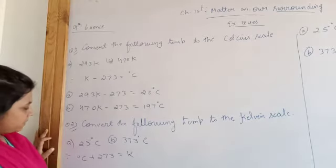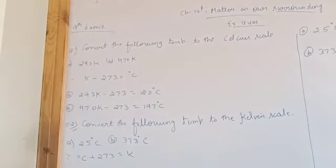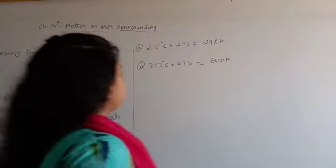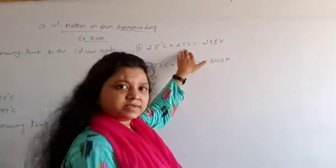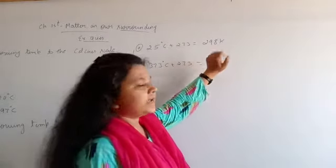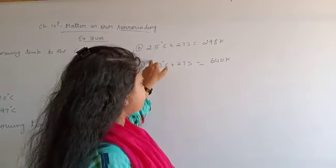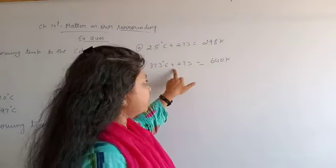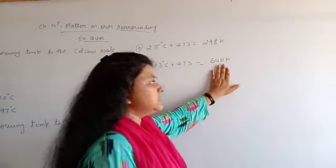For the conversion, the answer is 298 Kelvin. The answer is 373 Kelvin. The answer is 640 Kelvin.